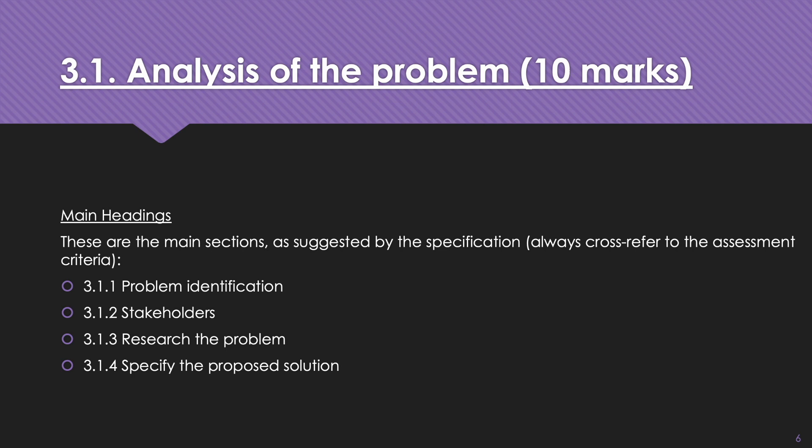The headings are: problem identification, stakeholders, research the problem, and specify the proposed solution. The headings don't have to be exactly like that — they might not be quite right for you. For research the problem, you might just have 'research', or 'researching existing solutions', or 'research findings'. You don't have to have exactly the same words, but I definitely expect to see those four headings in there.